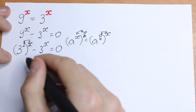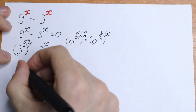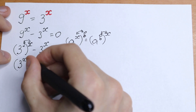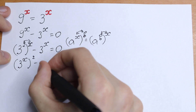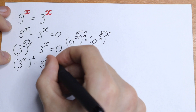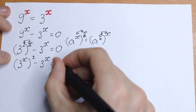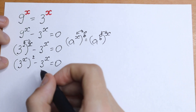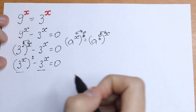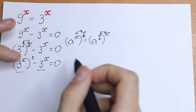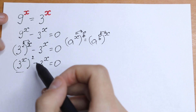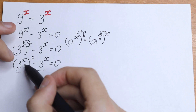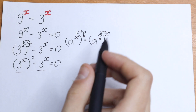So let's swap this in our case. We'll have 3 to the power x squared, minus 3 to the power x, equal to 0. And take a look — we have 3 to the power x and 3 to the power x right here. Moreover, we have 3 to the power x times 3 to the power x, because we have a square.